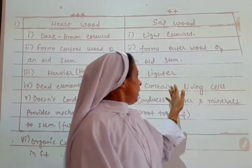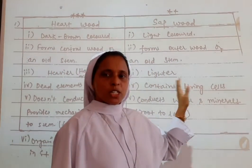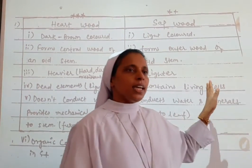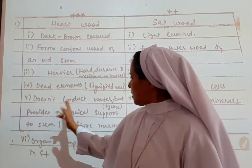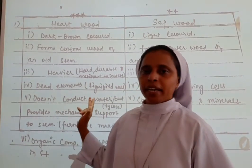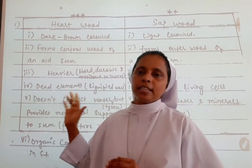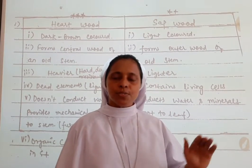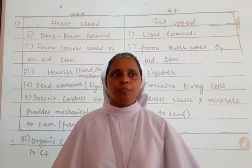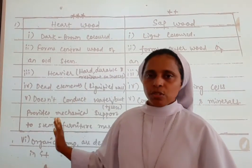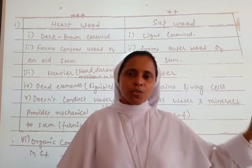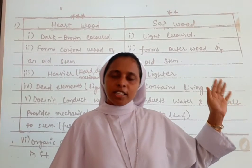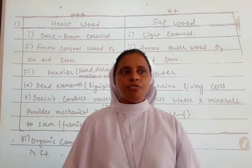Heartwood contains dead cells while sapwood contains living cells. Heartwood does not conduct water but provides mechanical support. Sapwood conducts water and minerals from the wood to the leaf portion. Hardwood is used for furniture making, whereas sapwood is of no direct commercial use but conducts water and minerals.